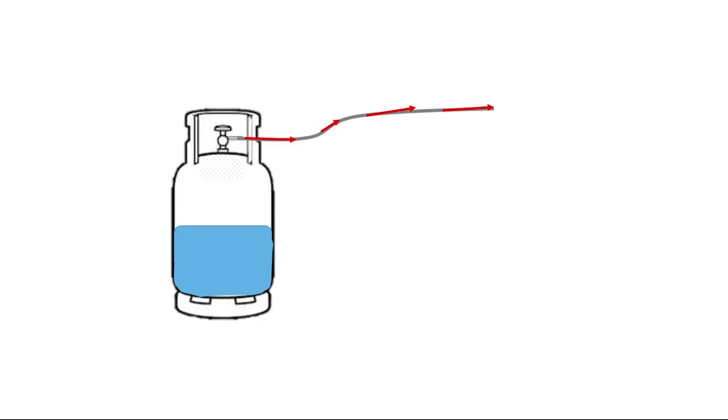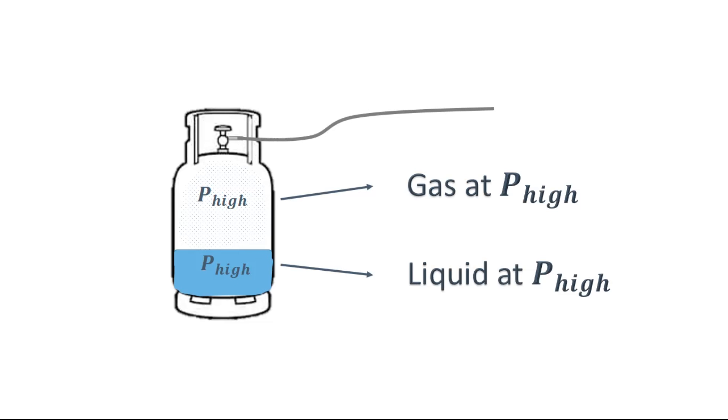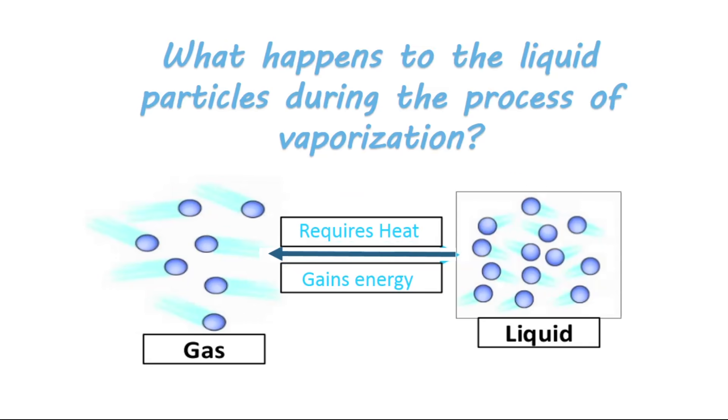which means the inside of the tank is no longer pressurized enough to keep the liquid from boiling. So more of it boils off until the gas reaches the required pressure again and equilibrium is attained. But what does this have to do with the low temperature?